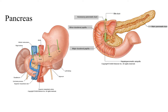The head is the part nestled into the C-shaped loop of the duodenum. Then that gives rise to the neck, which is between the celiac trunk and the superior mesenteric artery. The body extends the rest of the way until you reach the very tip, which is the tail. Notice that the pancreas is posterior to the stomach — the stomach here has been drawn transparent so you can see how the pancreas sits nestled behind it.